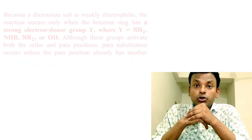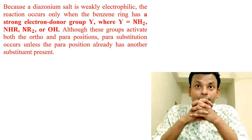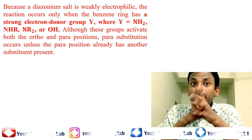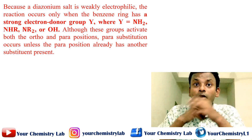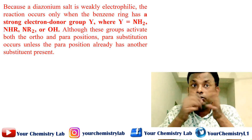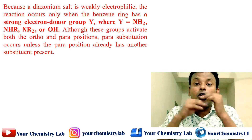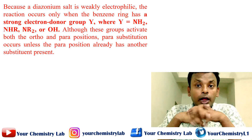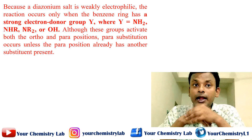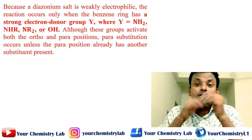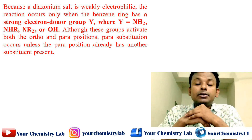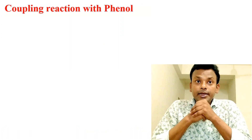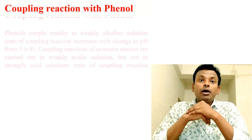Because a diazonium salt is a weak electrophile, the reaction occurs only when the benzene ring has a strong electron donor group Y, where Y equals NH2, NHR, NR2, or OH. Although these groups activate both ortho and para positions, para substitution occurs unless the para position already has another substituent present.